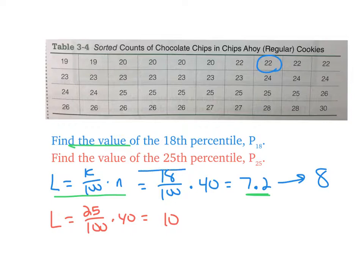Look at the next one. The 25th percentile. I did the exact same formula. Except this time I got a whole number, I got 10. So I'm going to find the 10th number, which is this one. When they give you a whole number and you find that one, you're going to find the midpoint between this one and the next one, 22 and 23, which means it'd be 22.5. So you would say 25 percent of the data values are below 22.5 and 75 percent are above 22.5.